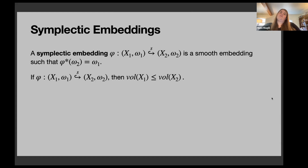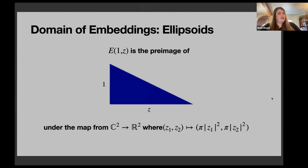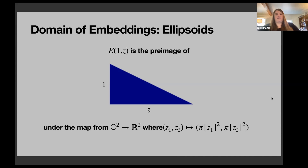The domain of our embeddings are four-dimensional symplectic ellipsoids. For this talk, because we'll draw two-dimensional pictures, we can think of an ellipsoid parameterized by z, which gives us the eccentricity. E(1,z) will be the pre-image of a right triangle sitting at the origin under the moment map from ℂ² to ℝ². The π means we're thinking of z as an area rather than a radius.